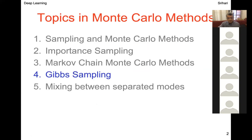The conceptually simplest approach for drawing samples from an undirected graph is Gibbs sampling. Suppose we have a graphical model over a d-dimensional vector of random variables X — we iteratively visit each variable X_i and draw a sample conditioned on all the other variables.